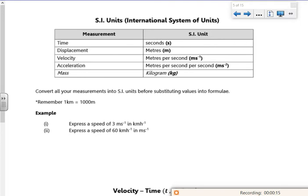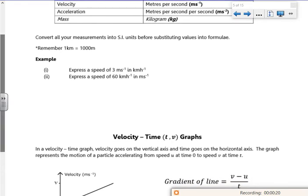Metres per second is ms to the minus 1, metres per second squared is ms to the minus 2. So let's have a look at this, we're going to do some conversions.